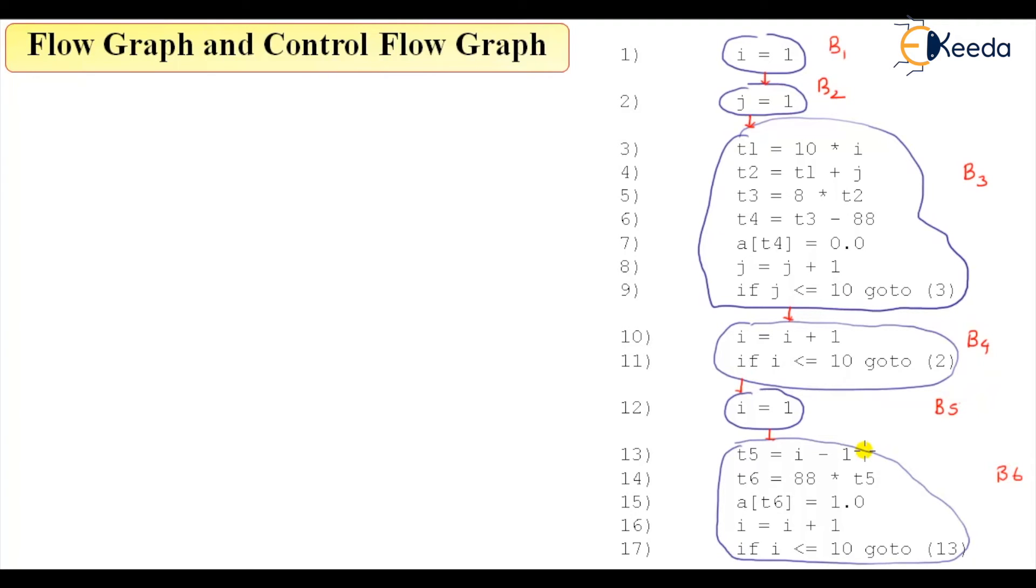here we can show that these are the blocks. There will be an edge from, let's say, go to three, and then there is go to two. Okay, so there will be an edge from instruction number nine to the instruction number three and I'll represent that edge by using this one. Okay, so there will be an edge